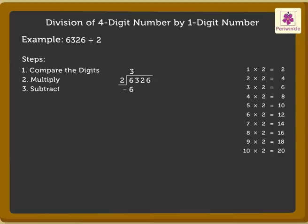Subtract 6 from 6. The remainder 0 is written in the thousands column. Now, bring down the next digit, that is 3 and write it beside 0. What do we do next? Back to comparison. 3 is greater than 2. So, we can divide 3 by 2. 1 into 2 is 2. Hence, we write 1 above 3 and 2 below 3.